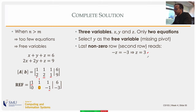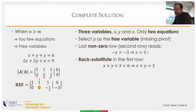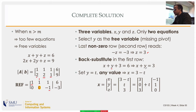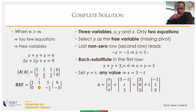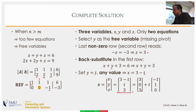The variable corresponding to the pivotless column — y — is a free variable that can take any value. From the last row, z equals 3. Back substituting into the first row with y free: x plus y equals 3, so x equals 3 minus y. Setting y equals t for any t in R, the complete solution is: x equals 3 minus t, y equals t, z equals 3.